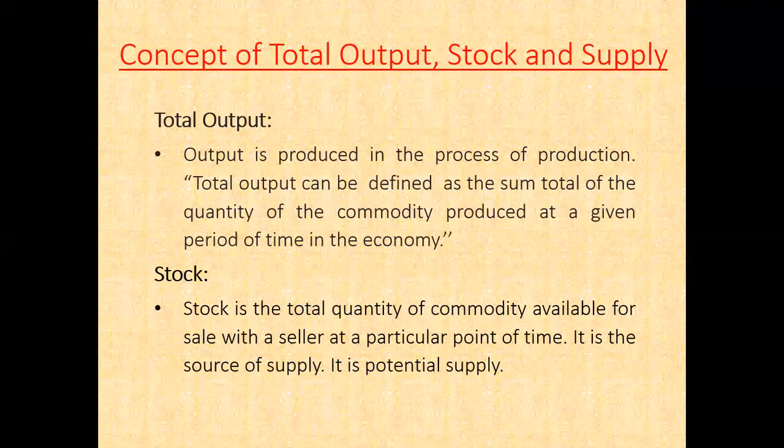In the case of perishable goods such as milk, fruits, fish, and vegetables, stock may be equal to supply because such goods may be damaged in transit, handling, or storage, and may go bad before being sold in the retail market. On the other hand, for durable goods such as furniture and garments, stock can exceed supply — if the market price is low, a part is stored. Therefore: stock may be equal to or more than supply; stock can exceed supply; and supply cannot exceed the stock.